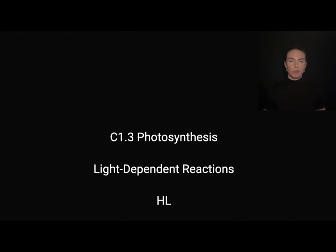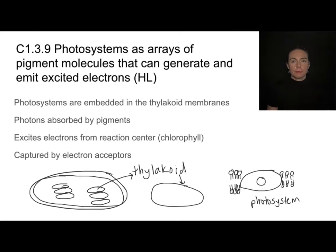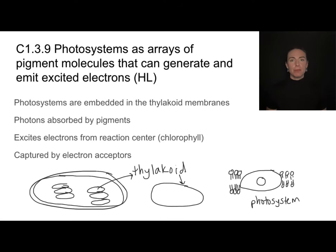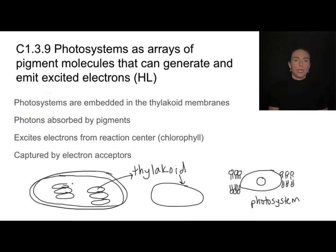This video is for C1.3 on photosynthesis and we're going to take a look at the higher level material, particularly from the light-dependent reactions. The light-dependent reactions need light, and to use light we have to be able to absorb that light. This is going to involve pigments. Pigments are embedded in structures called photosystems, and we're going to find those photosystems embedded within the membrane of the thylakoids.